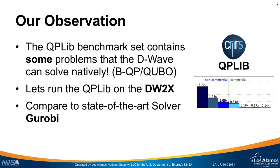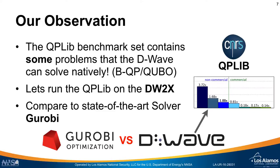Our observation was that the QPLib benchmark set contains some problems that the D-Wave can solve natively — these binary quadratic programming type problems. So our idea was to run these BQPLib problems on the D-Wave 2X hardware and compare it to the off-the-shelf, state-of-the-art solver, Gurobi. Effectively, we're going to do Gurobi versus D-Wave and produce a comparison plot.